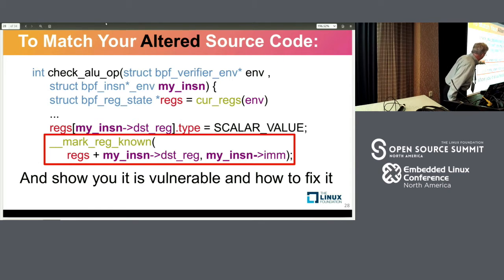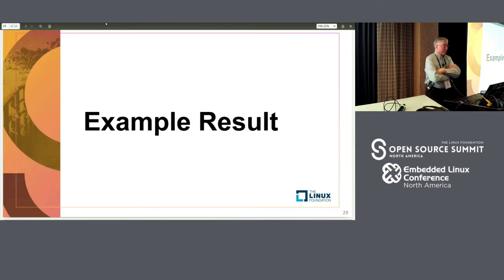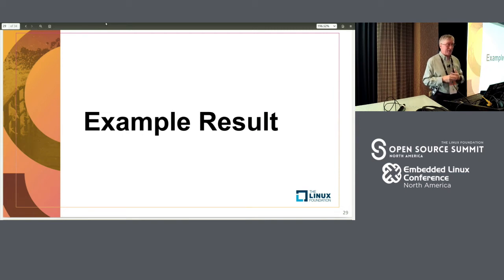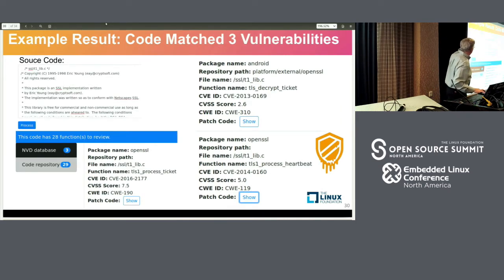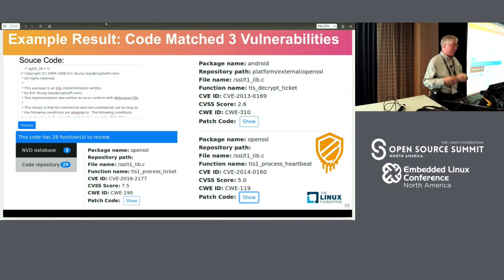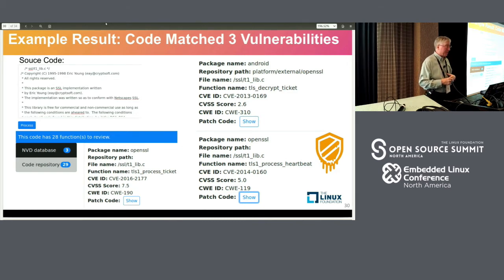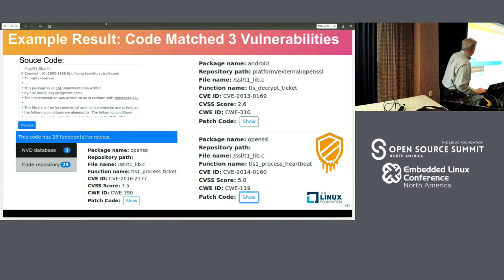The end result: we can show you the vulnerability — marked in red — and show you how to fix it by tying your code back to our database. We built an actual system with an API, and we have a demo at our booth showcase. In the demo, you can cut and paste source code into a box, run a process command, and find everywhere that code appears in our indexed repository — we've indexed all of Android, the Linux kernel, and quite a bit of Java code.